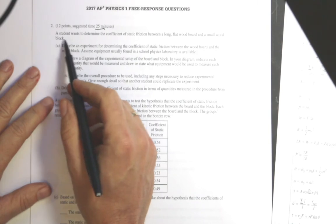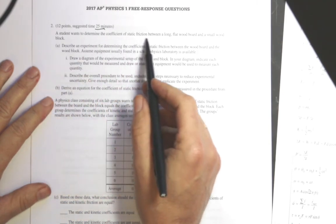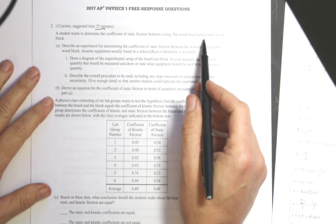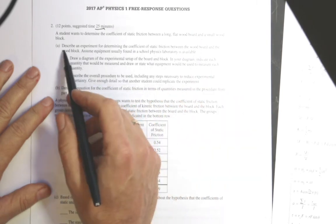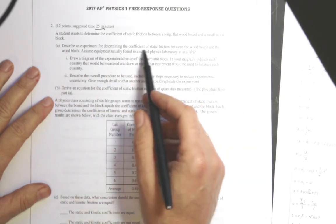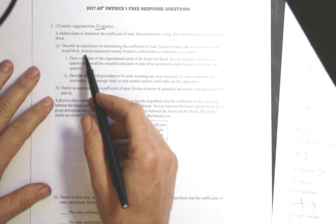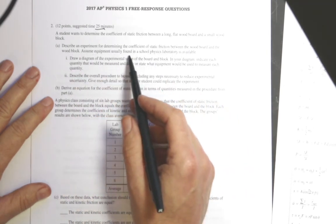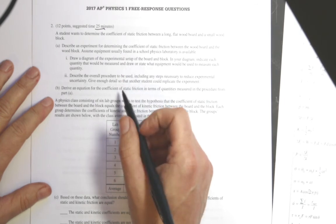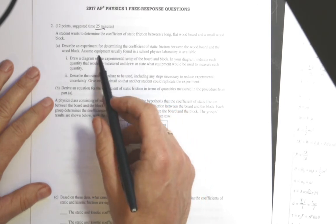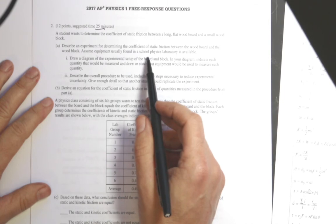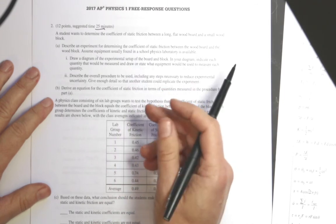12 points, suggested time 25 minutes. A student wants to determine the coefficient of static friction between a long flat wood board and a small wood block. Describe an experiment for determining the coefficient of static friction between the wood board and the wood block. Assume equipment usually found in the school physics laboratory is available.